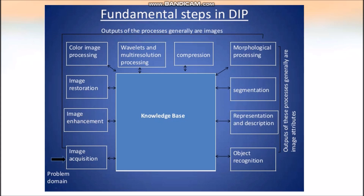Moving on to image restoration — this means restoring a degraded image. For example, a blurred image can be restored to a good clarity image. Normally we use mathematical models or probabilistic models for image restoration.